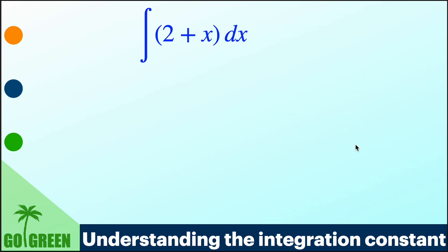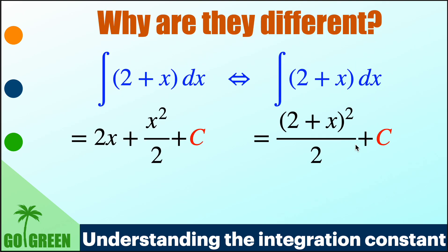So first, integration 2 plus x dx can be split into two parts: integration 2 dx plus x dx, and then the integration process is easy. Integration 2 dx is just 2x and integration of x gives you x squared by 2 plus C. This is the integration constant. So we have seen one of them at least.